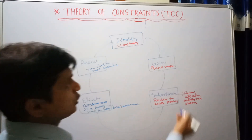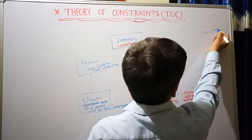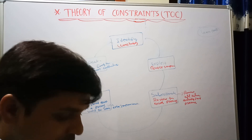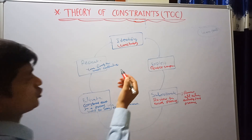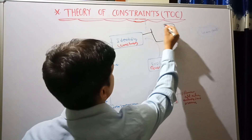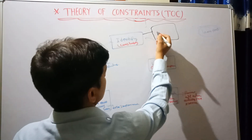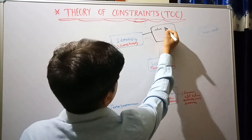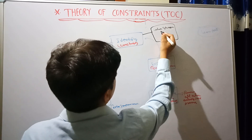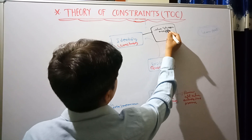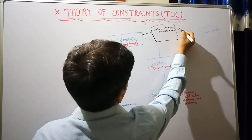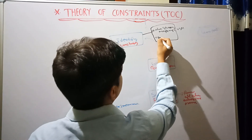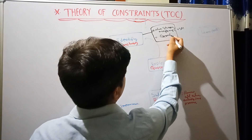For all these processes you need lean tools — without lean tools you cannot be successful with TOC. To identify the constraint, two lean tools are most important. The first is Value Stream Mapping, and the second tool for identifying the constraint is Gemba.